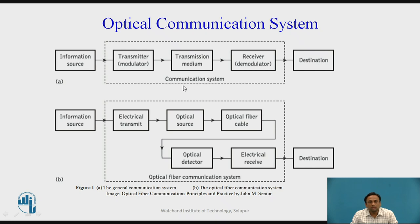In the basic communication system, there is an information source, which can be a text file, video file, or whatever data you want to send. This information source is given to the transmitter section, which is a modulator, where modulation is done. The information signal is converted into an electrical signal which is transmitted through a transmission medium.